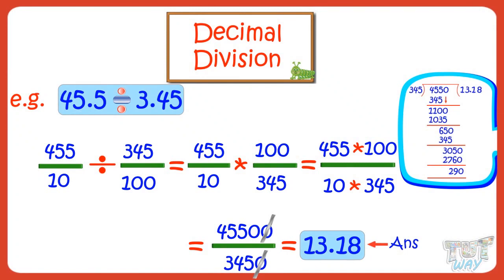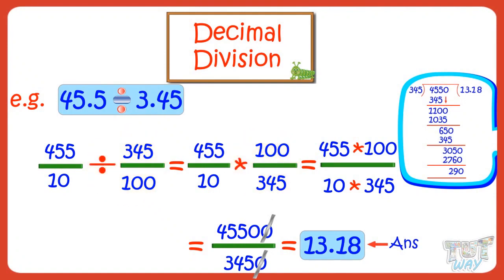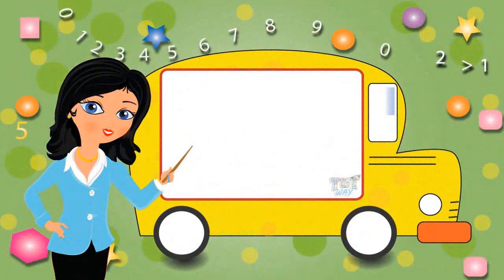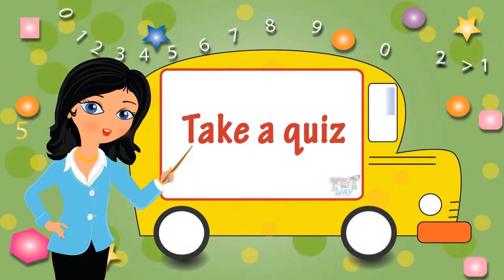Isn't it simple? You just have to first write the decimal in rational number form. Dividing with a rational number is the same as multiplication with its inverse. Then divide the product of numerators by the product of denominators. Now you may go ahead and take a quiz to learn more. Bye-bye!